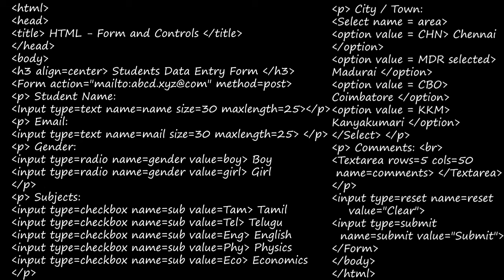And then next paragraph tag is opened, city or town, select name is equal to area, option value - we have seen here with the select tag. Option and the value tag we have used. Inside this option tag you can give anything. After option value is equal to, you can give some value and close it, and after that you will give the display text like Chennai. That will be displayed in the list in that form. And after giving that, you will close the option tag, slash option. You can give a number of options you need.